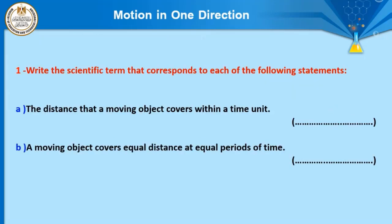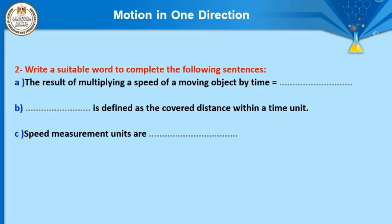Now some review questions. Write the scientific term: 'the distance that a moving object covers within unit time' — this refers to speed. 'A moving object covers equal distance at equal periods of time' — this concept is regular speed.